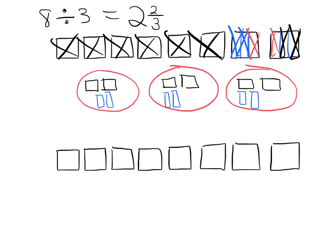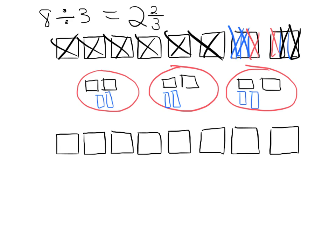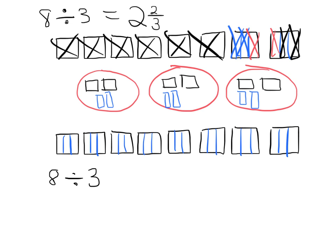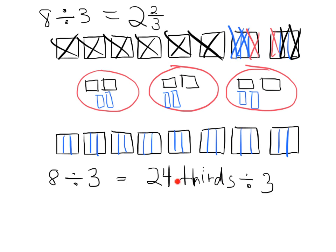Now another way we can think of this: we take these 8 cookies and immediately cut them all into thirds. So when we have 8 divided by 3, we can think of this as 24 thirds divided by 3. Instead of thinking of 8 wholes, we think of it as 24 thirds. So 24 thirds divided by 3 — well, 24 divided by 3 is 8, so 24 thirds divided by 3 equals 8 thirds.